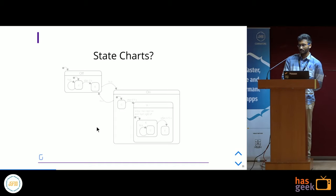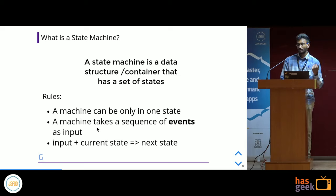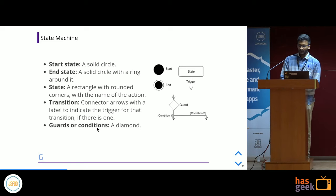So how are state charts going to be relevant in solving this? Before understanding what a state chart is, we need to understand what a state machine is. A state machine is basically a data structure or container that has a set of states. It follows a few rules: a machine can only be in one state at any point of time, and a machine takes a sequence of events as input. The combination of input plus current state will trigger a change to the next state.